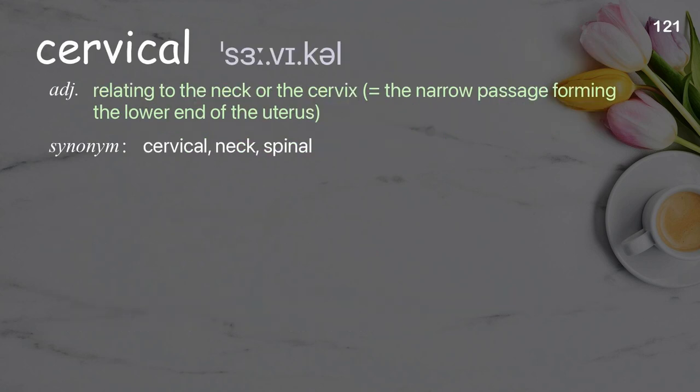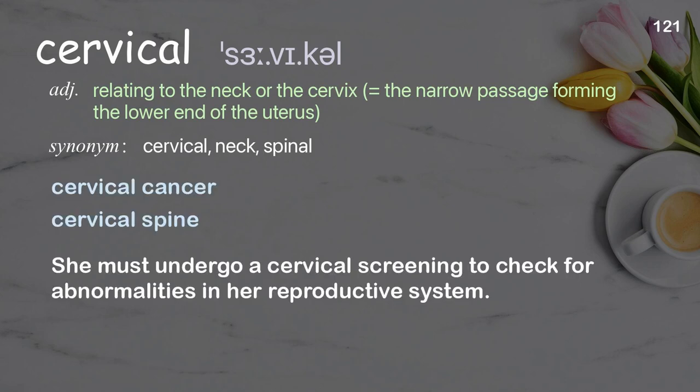Cervical: Relating to the neck or the cervix — the narrow passage forming the lower end of the uterus. Examples: Cervical cancer. Cervical spine. She must undergo a cervical screening to check for abnormalities in her reproductive system.